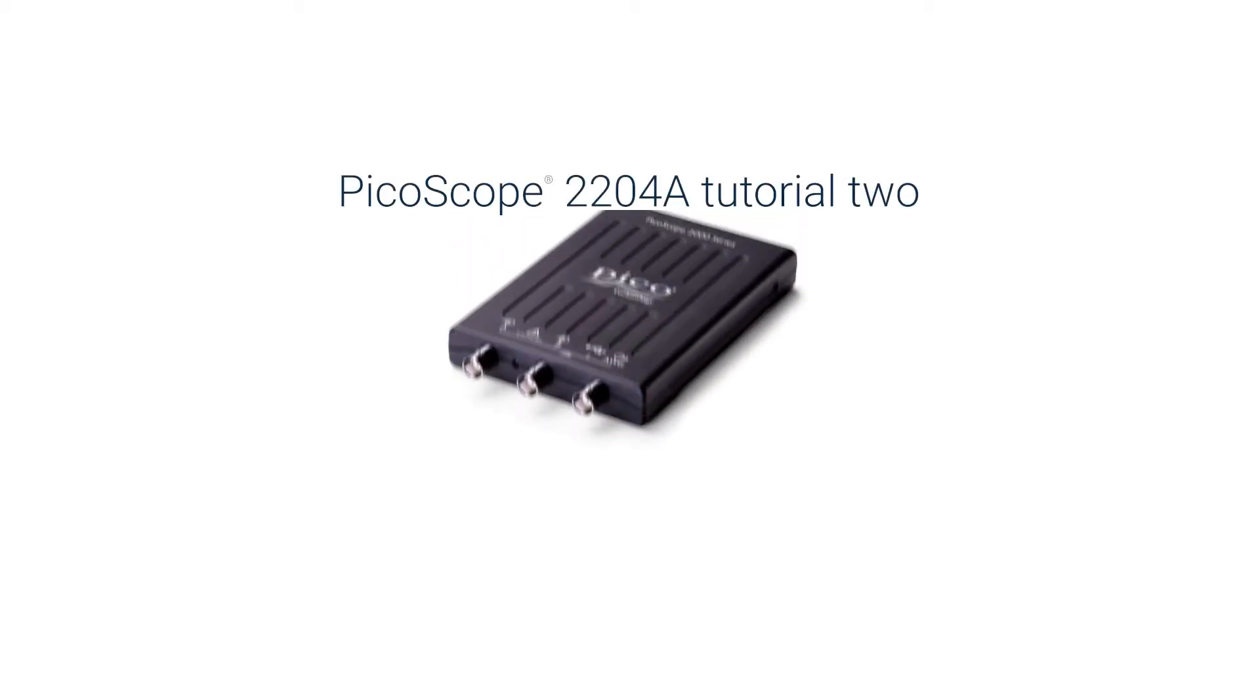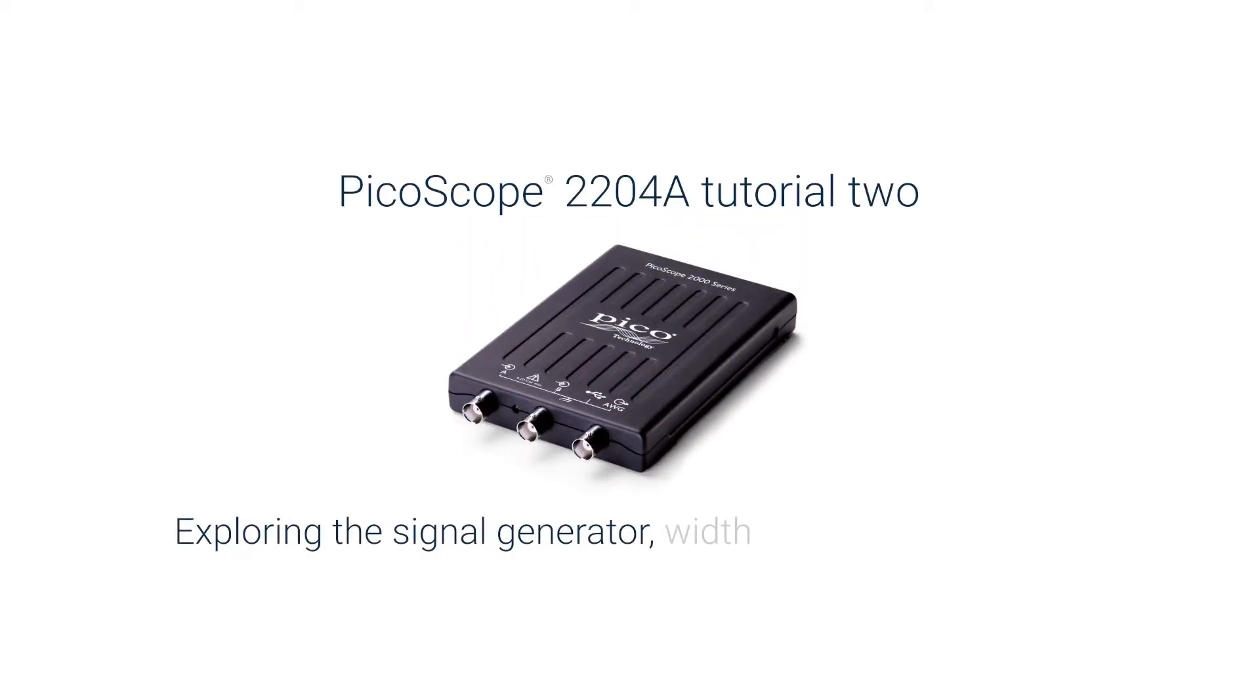Welcome to part 2 of the Picoscope 2204A tutorial. In part 1, we set up a 1 kHz square wave using the signal generator and used it to compensate a x10 probe.